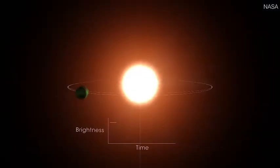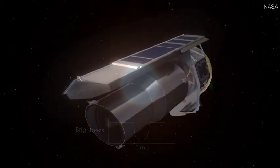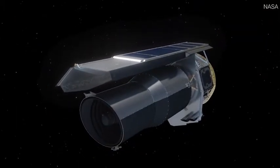TESS finds worlds like AUMIC b by catching tiny, regular dips in starlight called transits. Spitzer, now decommissioned, confirmed the transits during its final year of operations.